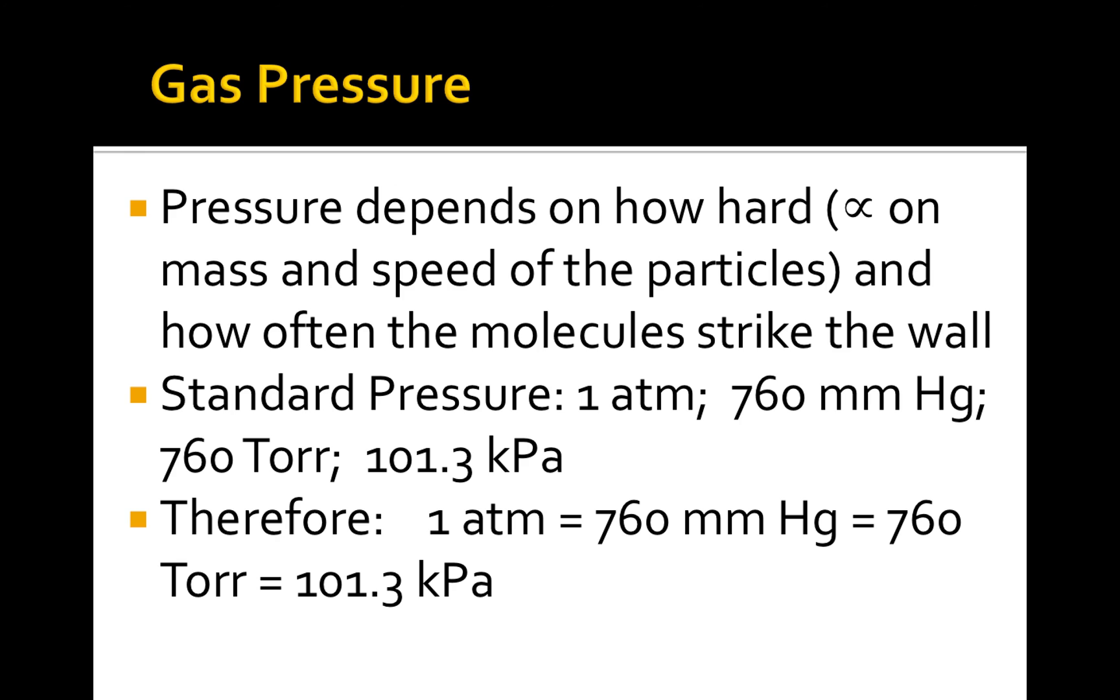Since those are all units of standard pressure, it makes sense that 1 atmosphere is equivalent to 760 millimeters of mercury, which is equal to 760 torr, which is equal to 101.3 kilopascals. These relationships can help you create conversion factors.